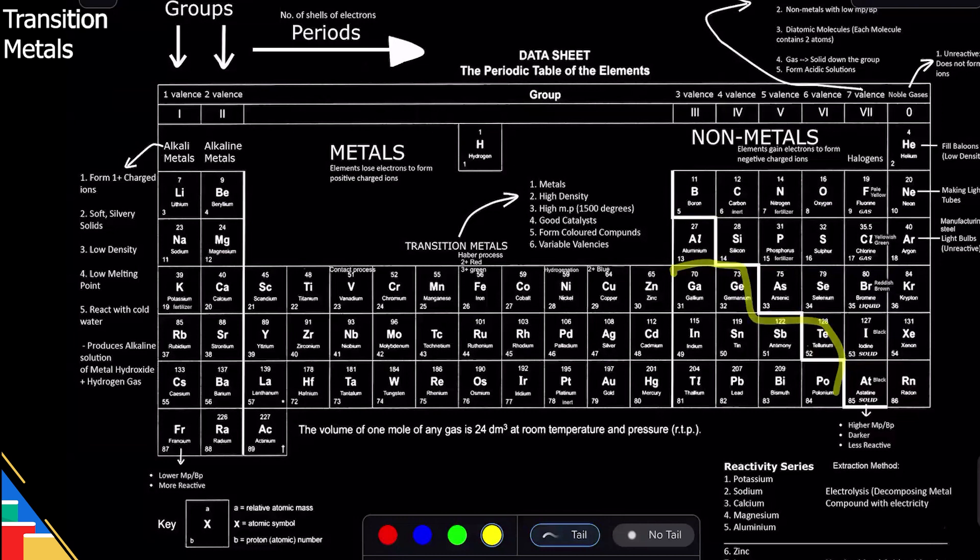Some of these are called post-transition metals, but we don't need to go into that. You just need to know that they have all the properties of metals. They're like the typical metals which we used to do with metallic bonding.